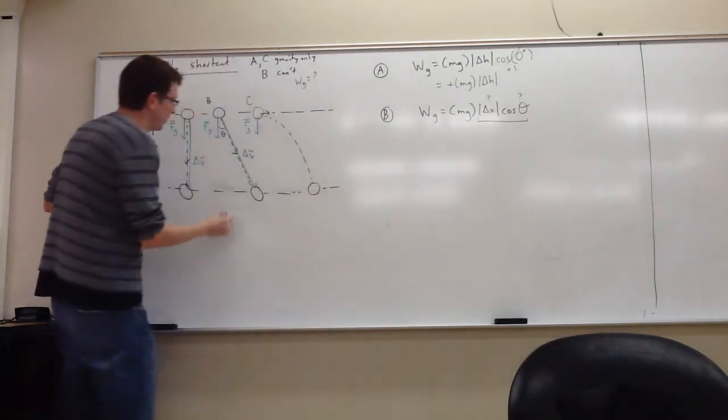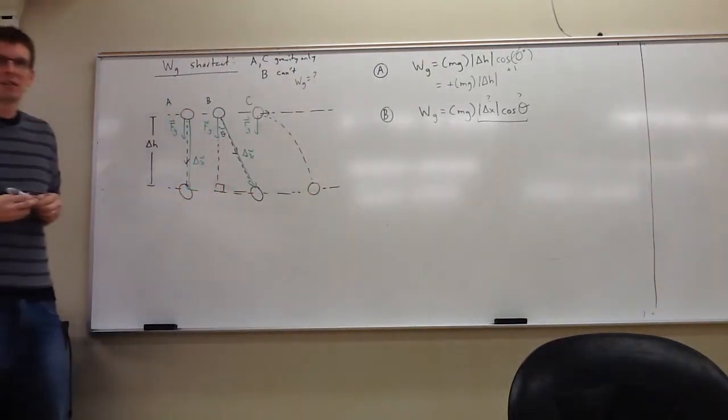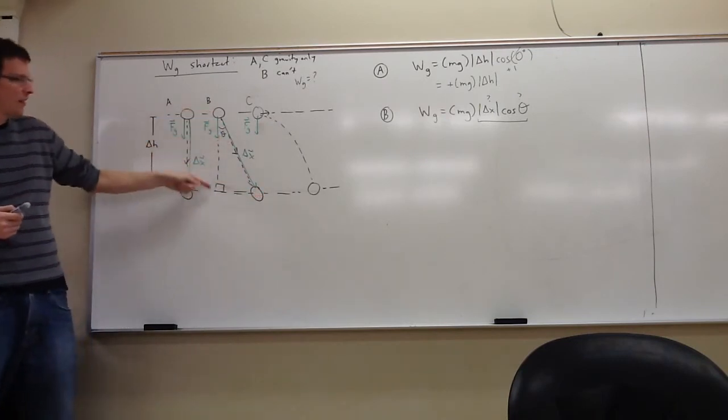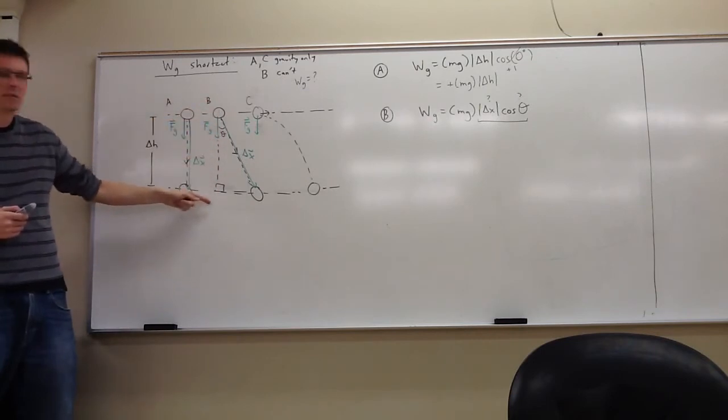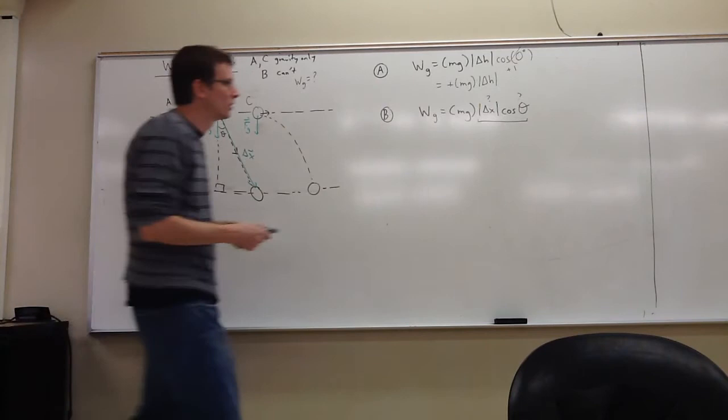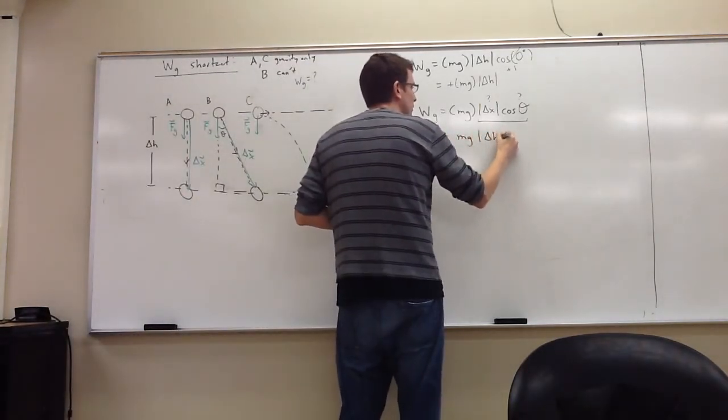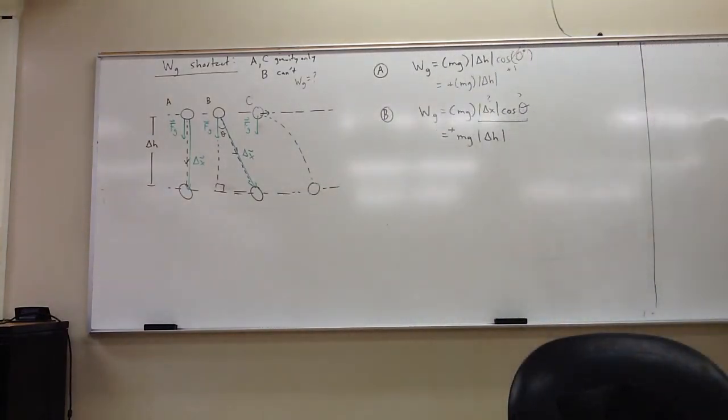And here's the reason why. If you make a sketch of this triangle that this thing went on, delta X is the hypotenuse. Delta X cosine theta is this side, which is what? Delta H. And look at that. I got the same exact thing as I did before.